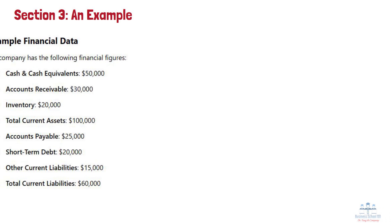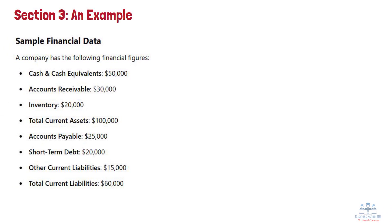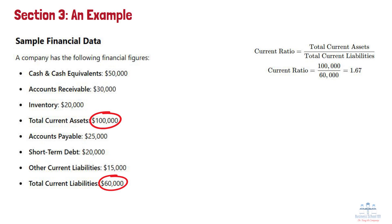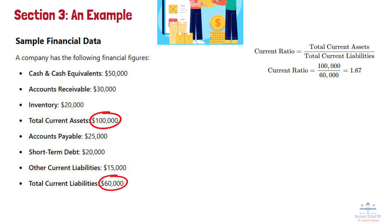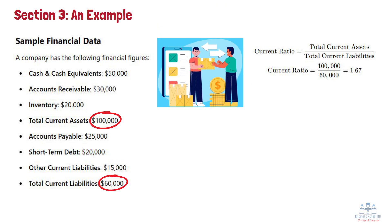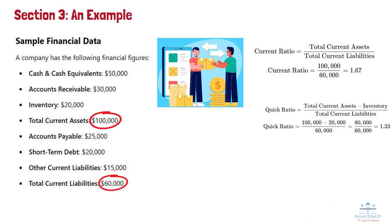Let's look at an example. Say a company has the following financial figures. The company's total current assets amount to $100,000, while its total current liabilities stand at $60,000. Based on this, the current ratio is calculated as 1.67, indicating the company has $1.67 in current assets for every $1 of short-term liabilities. To determine the quick ratio, we exclude inventory from current assets since it may take longer to convert into cash. After this adjustment, the quick ratio is 1.33, reflecting the company's ability to meet short-term obligations using only its most liquid assets.